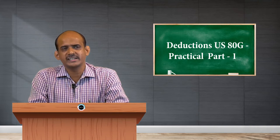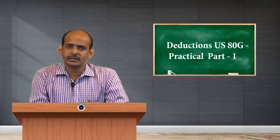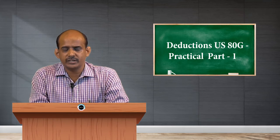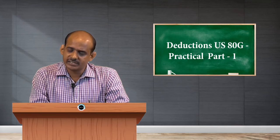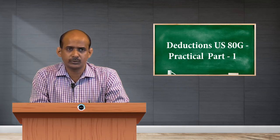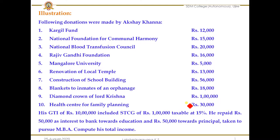The first donation is Kargil Fund — rupees 12,000 is given to Kargil Fund. This is a 'without limit' donation. Any donation given to Kargil Fund, Prime Minister's National Relief Fund, or National Children's Fund attracts 100 percent deduction and falls in the first category, i.e., without limit. The next one, National Foundation for Communal Harmony, is also a without limit donation. The third, National Blood Transfusion Council (NBTC), is also a very popular without limit donation.